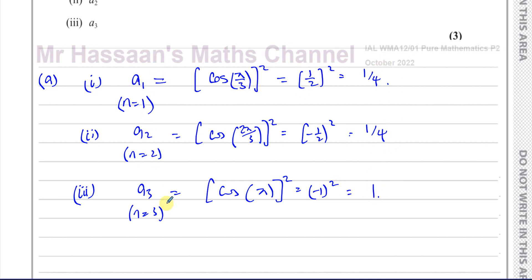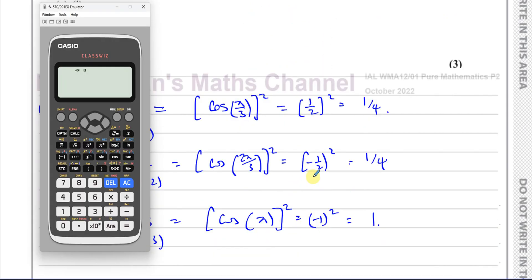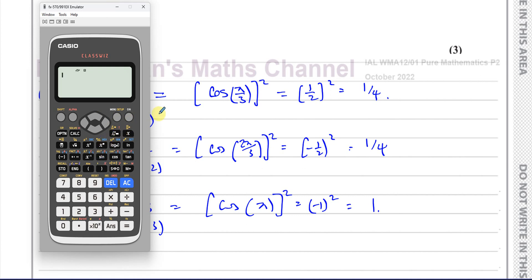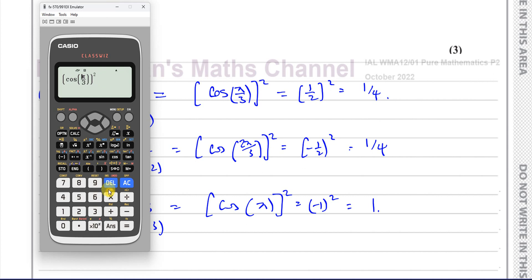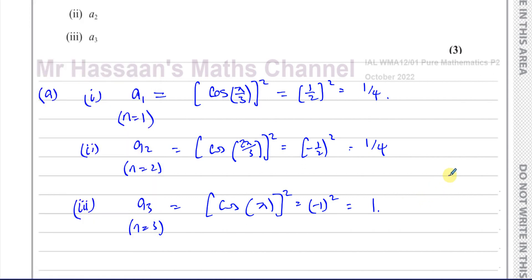If you want to use your calculator, set it up with a bracket, then cosine, then pi over 3 as a fraction, close the bracket and square it — that gives a quarter. Change to 2 pi over 3 and you get a quarter again. Then 3 pi over 3, which is pi, and you get 1. So a quarter, a quarter, and 1 — those are the first three terms.